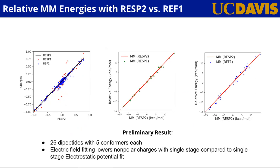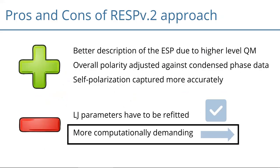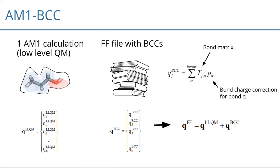I mentioned that RESP is a bit more computationally demanding. A few years ago, Hartree-Fock was also quite expensive, and Chris Bayly came up with the great idea of AM1 BCCs. We want to create a new version of AM1 BCCs to reduce the costs of RESP2. Before explaining the new version, let me briefly explain what AM1 BCCs are.